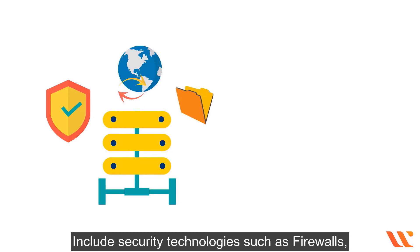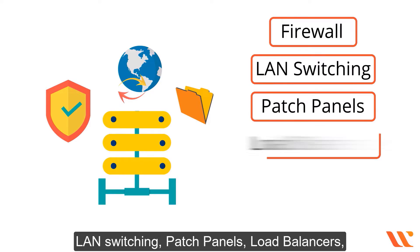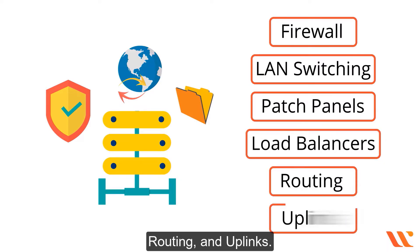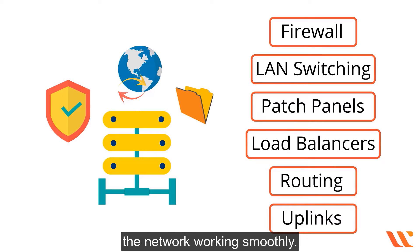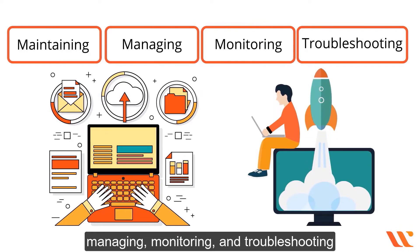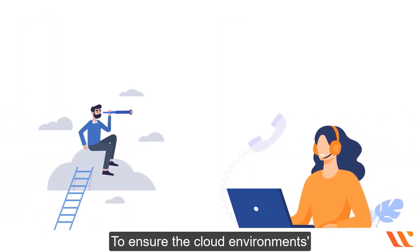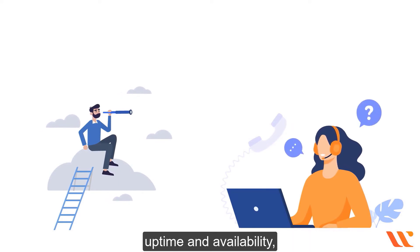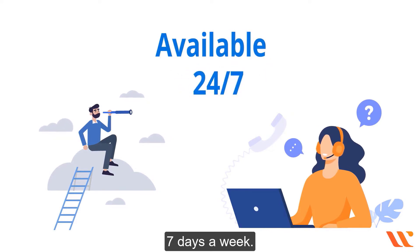Maintenance expenditures for network infrastructure include security technologies such as firewalls, LAN switching, patch panels, load balancers, routing, and uplinks — all the hardware that keeps the network working smoothly. Labor costs cover maintaining, managing, monitoring, and troubleshooting cloud computing infrastructure to ensure uptime and availability, with teams available 24 hours a day, seven days a week.